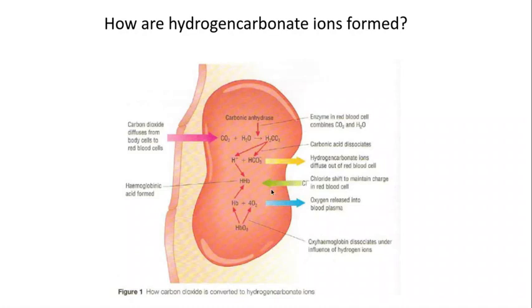This next part is more to do with the Bohr effect. Because hydrogen ions are present within the blood, this can be problematic — hydrogen ions are present in acidic solutions, and acidic blood is not good. So haemoglobin acts as a buffer, binding to hydrogen ions to form haemoglobinic acid — yes, you need to know that. Because haemoglobin is needed to act as a buffer, oxyhemoglobin dissociates to form oxygen, which is used for aerobic respiration, and the haemoglobin then acts as the buffer.